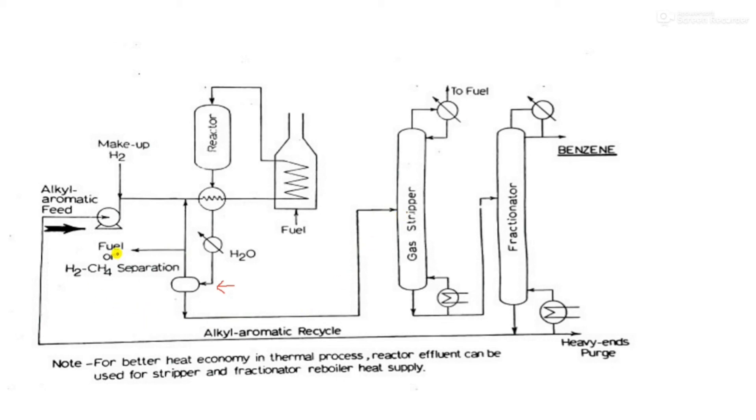The recycled stream has a good amount of hydrogen, so the purge stream is used for controlling the concentration of methane in the reactor.